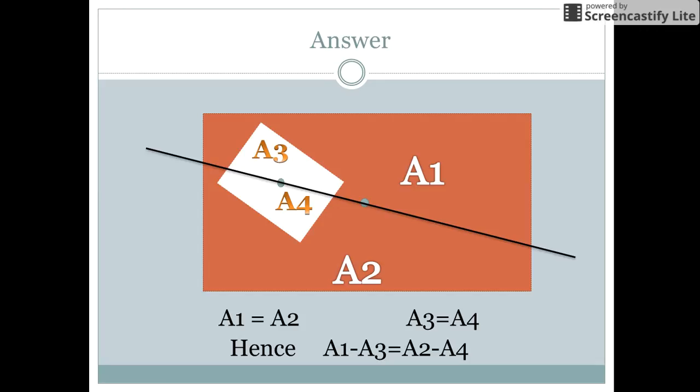According to the concept that any line passing through the center of a rectangle divides it into two equal parts, we can say that area A3 is equal to A4, and A1 is equal to A2.